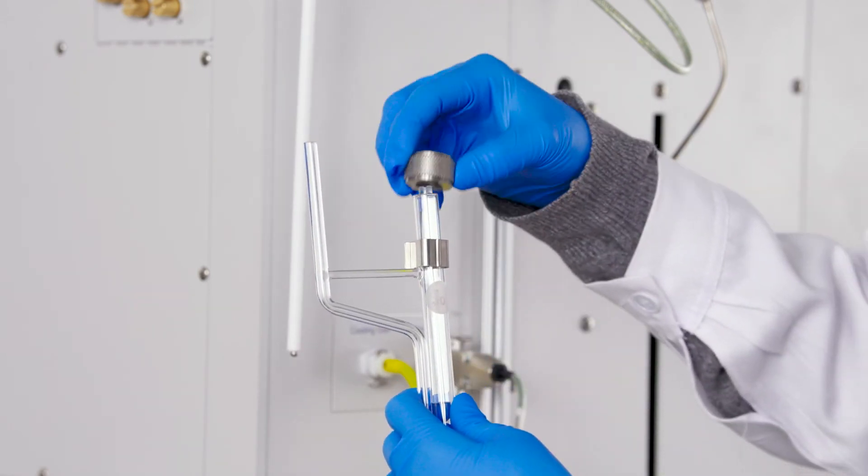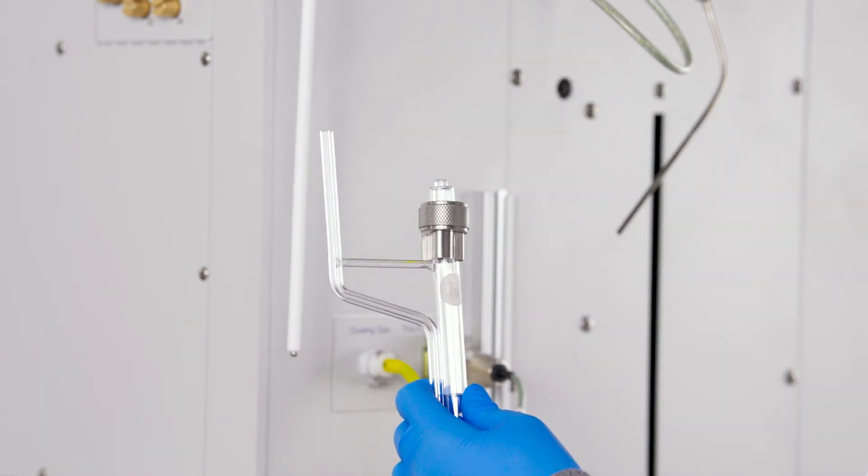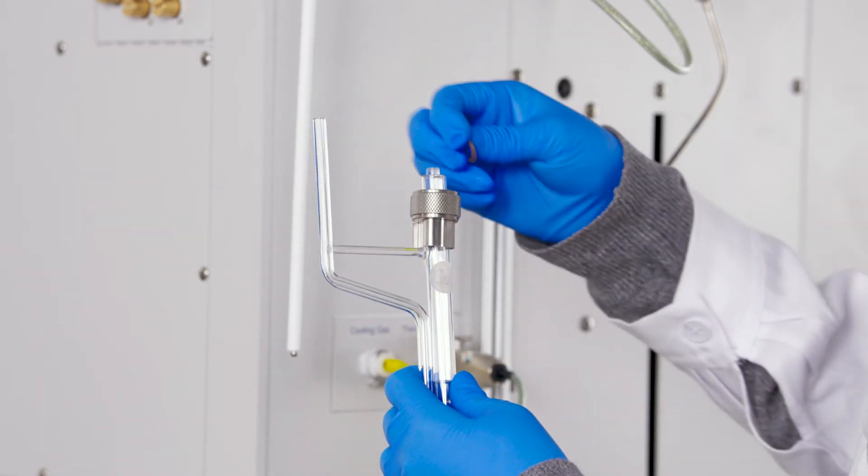Assemble the sample tube with the nut, ferrule, and o-ring. Check for debris or cracks on the o-rings and replace if needed.